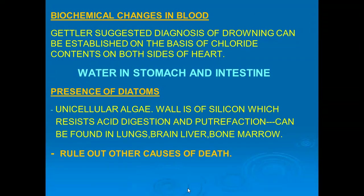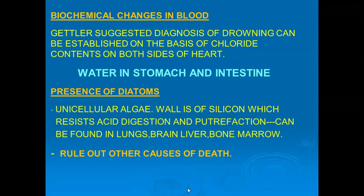Biochemical changes in blood also give an idea whether death is due to drowning or not. Gettler suggested that we can diagnose drowning on the basis of these biochemical changes. According to Gettler, if there is a difference of more than 25 mg% chloride content between the right side and left side of the heart, death is due to drowning.